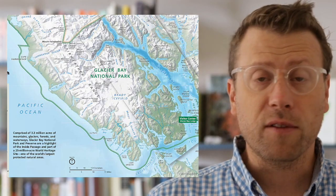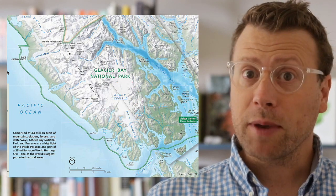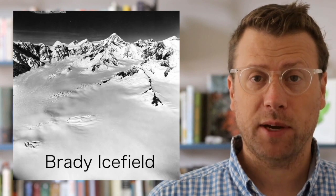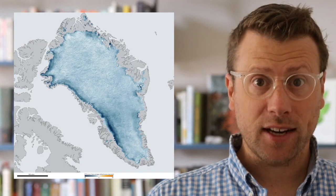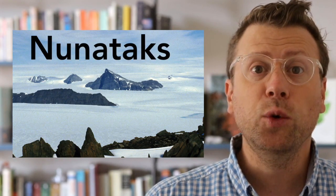Many of the tidewater glaciers on the west side of the park are fed by the Brady Ice Field, which is a large expanse of glacier ice that flows out in multiple directions, like a miniature version of the Greenland Ice Sheet. The difference between an ice field and an ice sheet is that mountain peaks poke out from ice fields, whereas ice completely encases the underlying topography in ice sheets. Peaks that are completely surrounded by ice, like an island, are called nunataks.